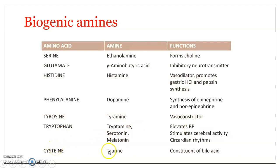Cysteine gets converted to taurine. Taurine is a constituent of bile acids. When studying the physiological aspects of the liver, we see that it secretes bile — bile pigments and bile salts — and taurine is a very important constituent in the formation of bile. So this covers decarboxylation, as well as the degradation of the carbon framework of amino acids, and we saw the importance of biogenic amines in the biological system.